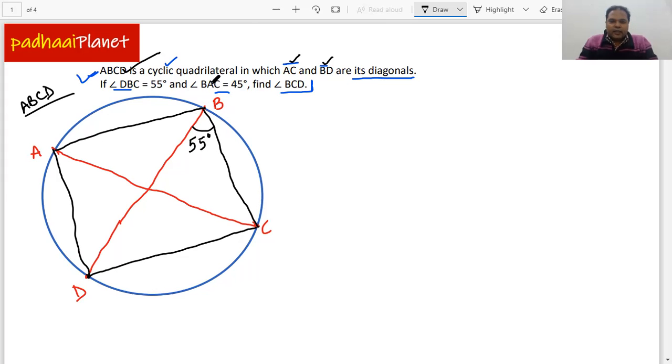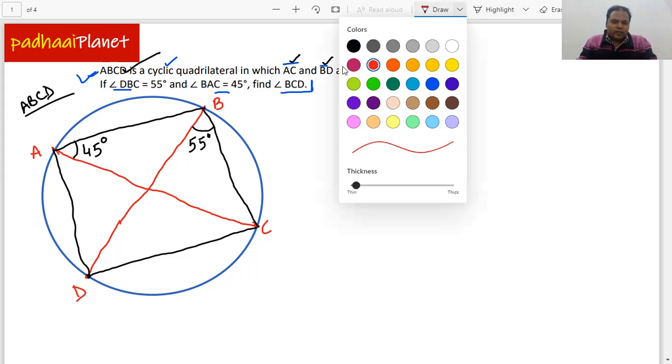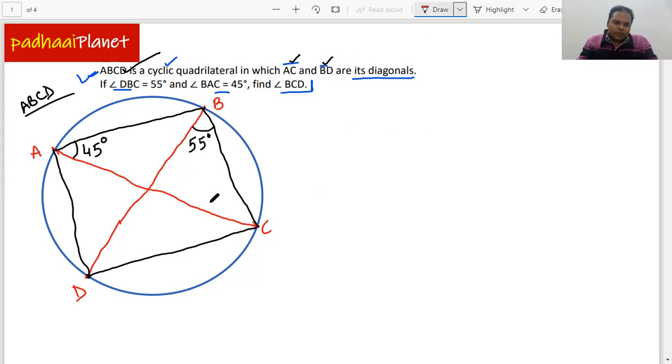And now they're saying angle BAC, B, A, C is also given there and that is 45 degrees. So this means this one is 45 degrees. Right, now what we need to find out is the angle BCD. So let's also mark angle BCD. So that means B then C and then D. So what we need to find out is this complete angle. Right. This is what we need to find out.